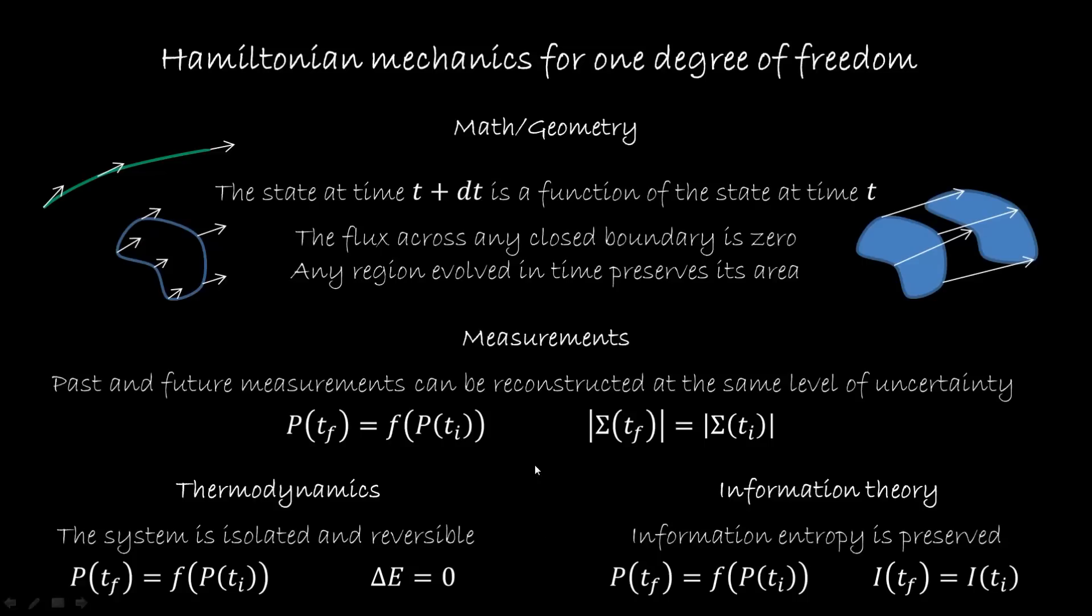Now what we can note here is that we are always sort of double dipping on the same hypothesis. So for measurement we had that the final state is a function of the initial state and then the conservation of uncertainty. For thermodynamics we had the same thing plus conservation of energy. For information theory we had the same thing, final state as a function of the initial state, and then conservation of entropy. Now it would be nice to see these two actually coming from one condition and this is what we're going to do in the next section.